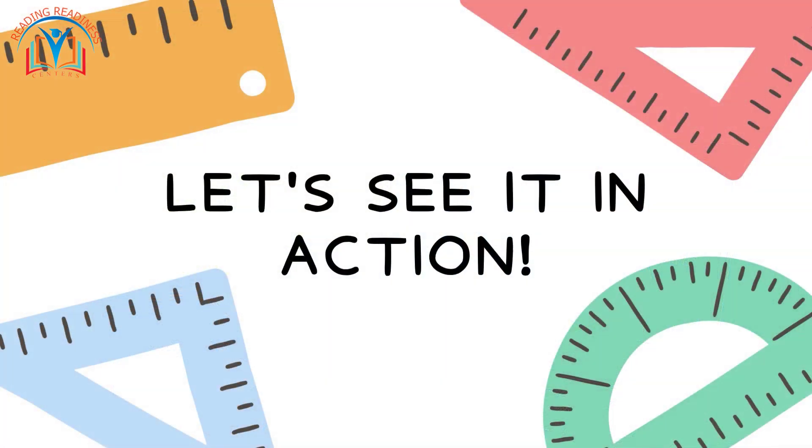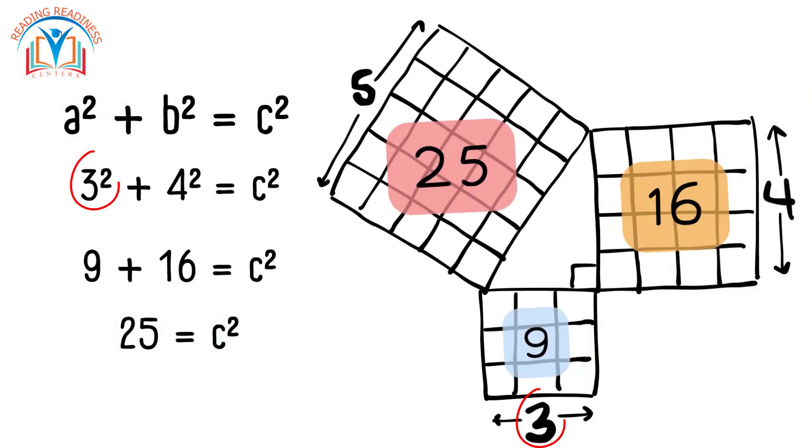Let's see it in action. Suppose our base is 3 squares wide and our height is 4 squares tall. We can count the area of each small square. 3 times 3 is equal to 9 for the base and 4 times 4 is equal to 16 for the height. Now, for the big hypotenuse square, we add them up. 9 plus 16 is equal to 25. Amazingly, the big square has exactly 25 squares inside, just like the sum of the smaller squares.